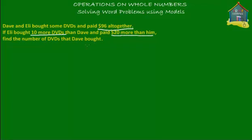So there are three things given to us: Dave and Ellie bought some DVDs and paid $96 altogether, so the total sum of money that they paid was $96. Now, Ellie bought 10 more DVDs than Dave, and she paid $20 more than Dave for those extra DVDs — for the 10 more DVDs that she bought.